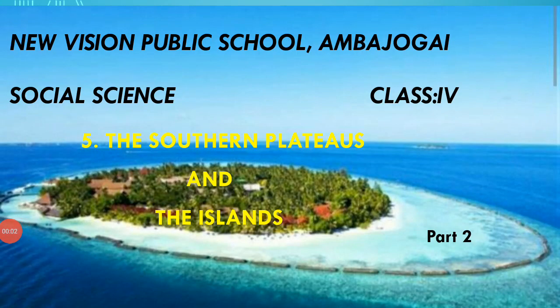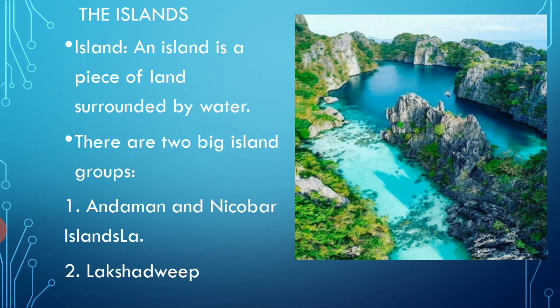Hello my dear students, today we are going to see social science class 4th lesson number 5, the Southern Imperatives and the Islands, part 2. In the second part we are going to see about the island groups found in India.